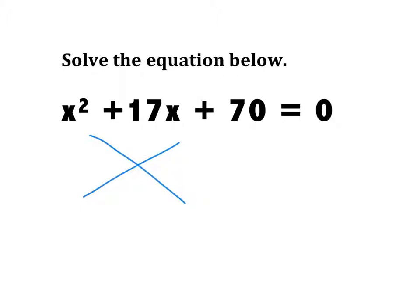Now, the first thing I'm going to do is I'm going to drop in the coefficient, which is 17, in the top of the box. You check the notes, that was the second step after I make the X. I drop that middle number down in here.